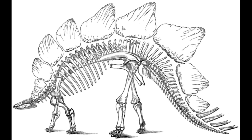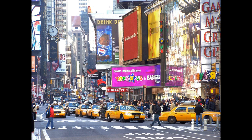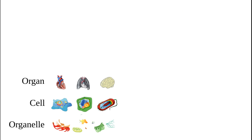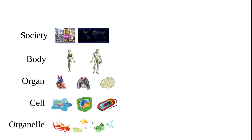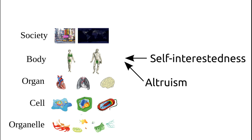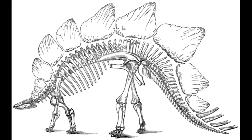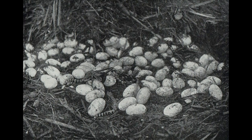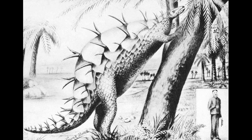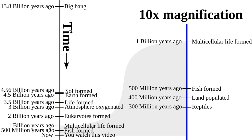How did we manage to get from such primitive creatures to modern society in such a short period of time? Hierarchical layers of altruism paved the way for rapid progress. That which is altruism at the level of organs is self-interestedness for the life of the animal. Reptilian brains are well known for seeking the well-being of the individual animal. For example, it is believed that dinosaurs laid their eggs, then abandoned their children to fend for themselves as the parent went off to serve itself.